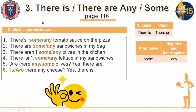In point three, you have the topic: there is, there are, any, and some. You use 'there is' with a singular noun — one thing. 'There are' is used when you have a plural noun, more than one. 'Some' is used with affirmative sentences. 'Any' is used with negative and interrogative forms — for negative sentences and questions.